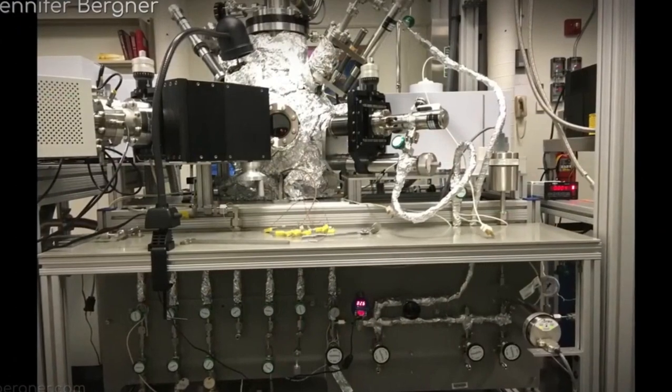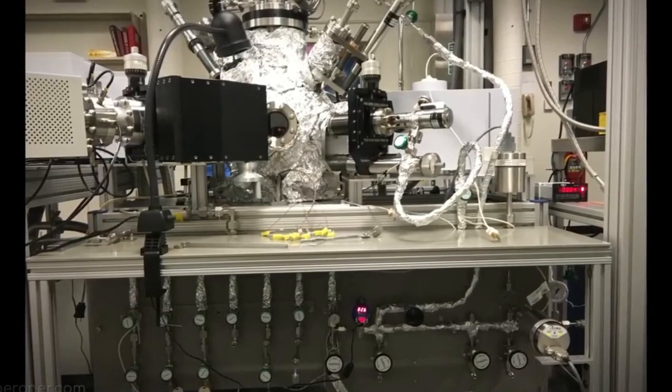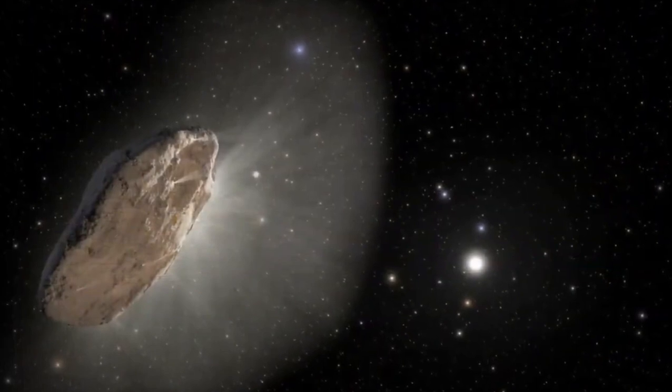Moreover, the kinematic space known as the local standard of rest, encompassing our segment of the Milky Way galaxy, closely aligns with Oumuamua's trajectory. This alignment contributes to the ongoing mystery surrounding its origin.